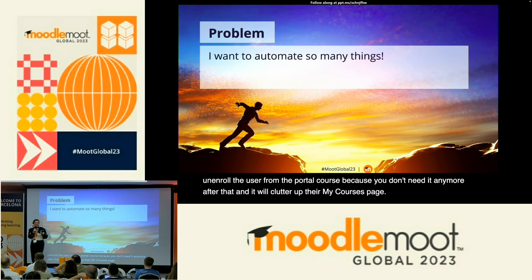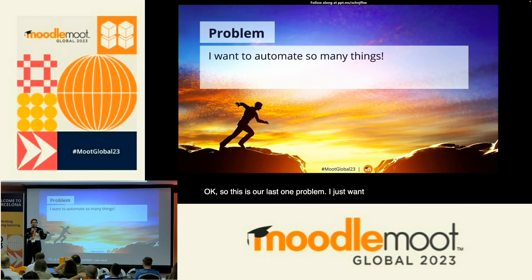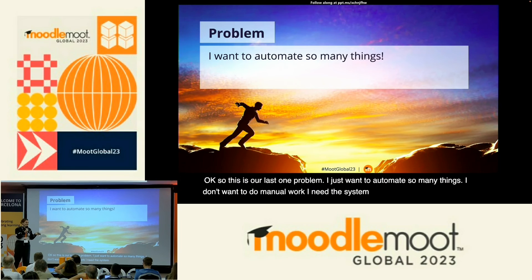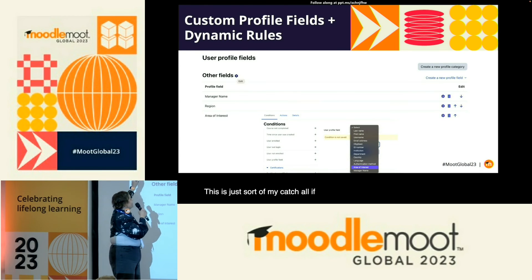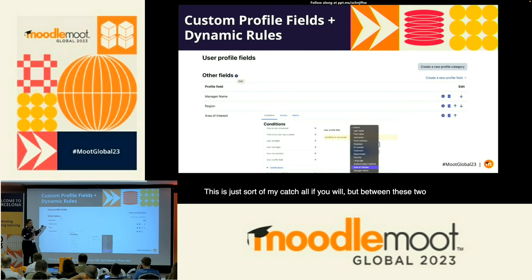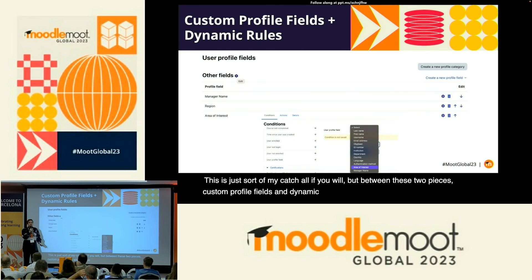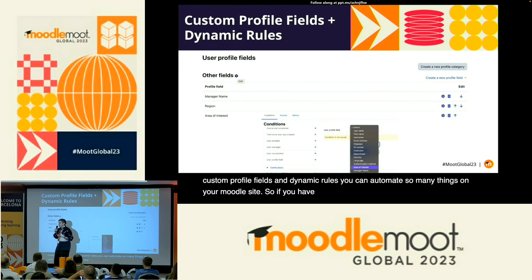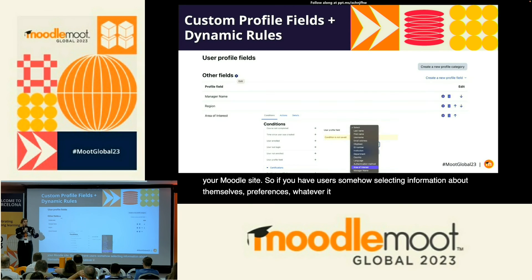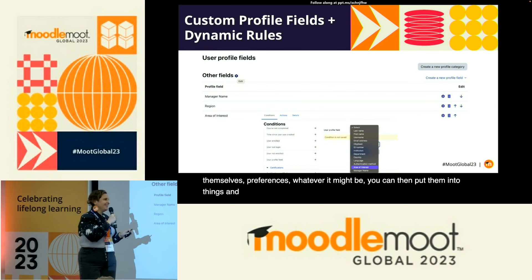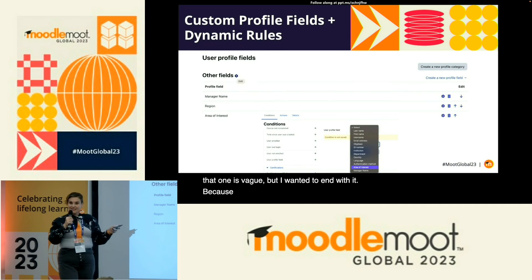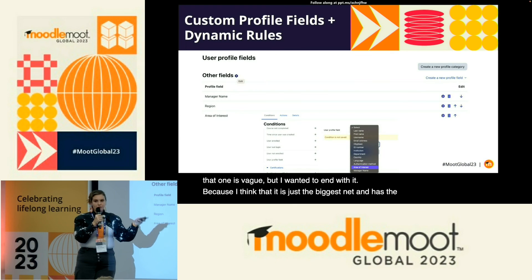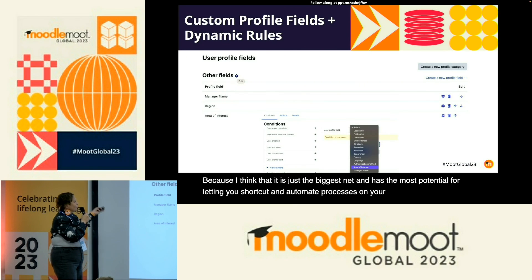This is our last one — problem: I just want to automate so many things, I don't want to do manual work, I need the system to be doing a lot of work for me. Between these two pieces — custom profile fields and dynamic rules — you can automate so many things on your Moodle site. If you have users selecting information about themselves, preferences, whatever it might be, you can then put them into things or assign them what they need. Dynamic rules and custom profile fields have the most potential for letting you shortcut and automate processes on your site.